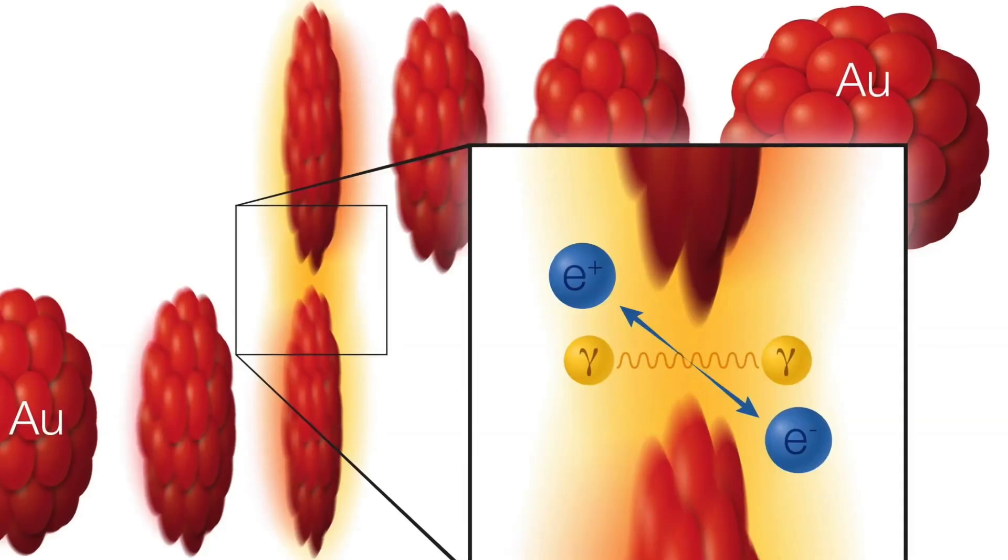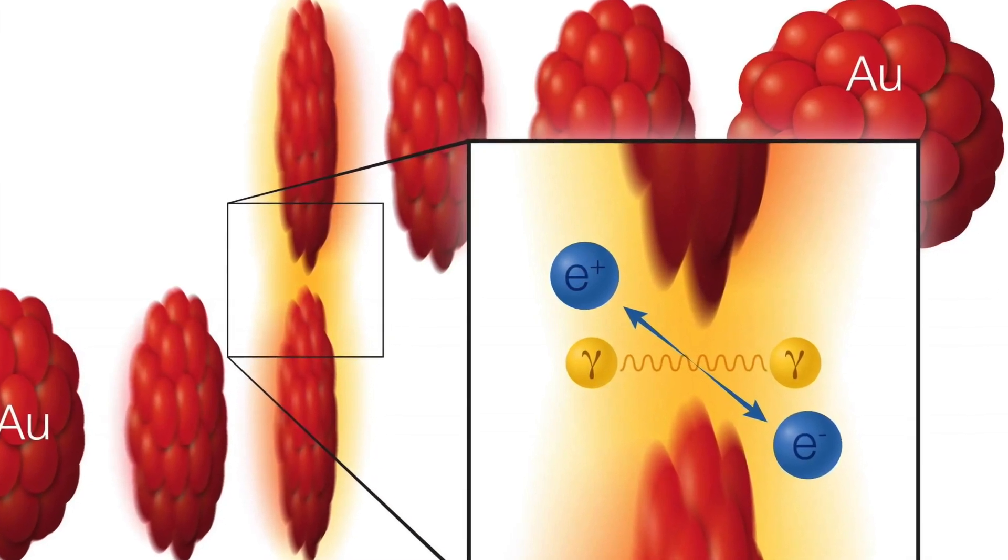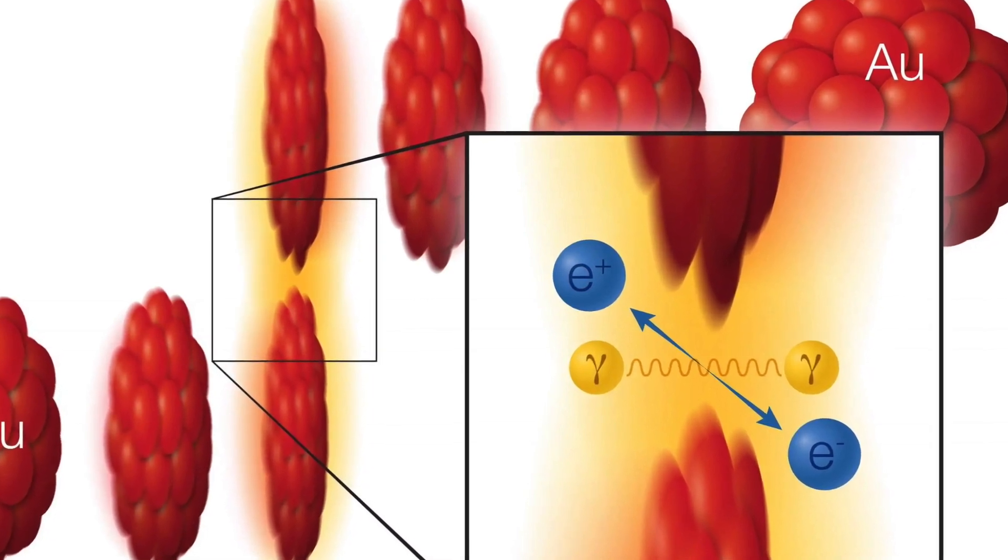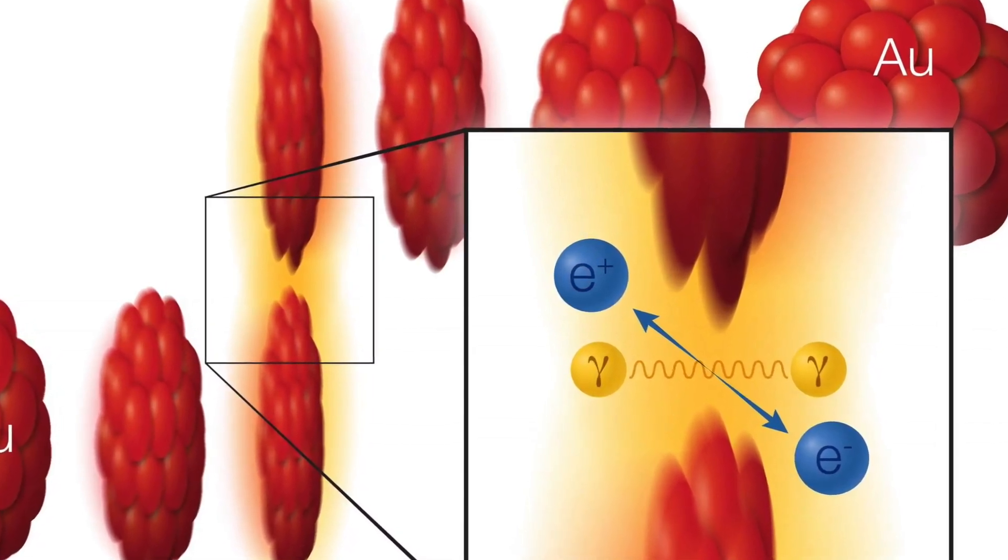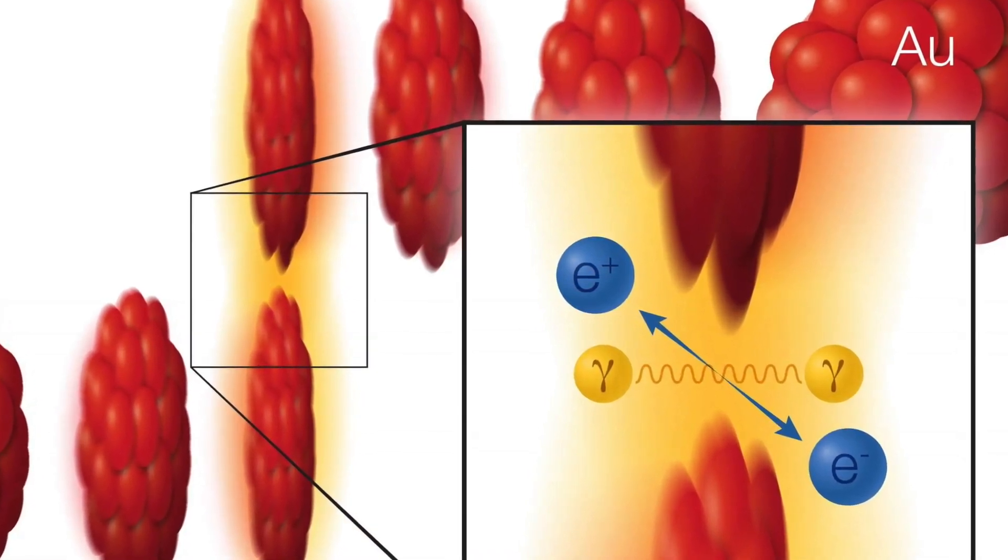So even though Ken Wheeler denies that photons and electrons exist, he claims that this experiment involving them somehow proves his point.